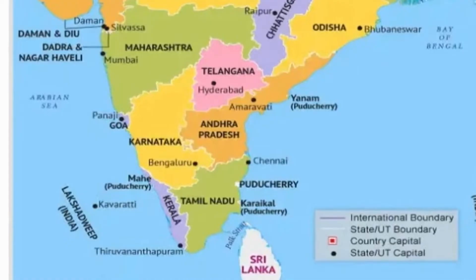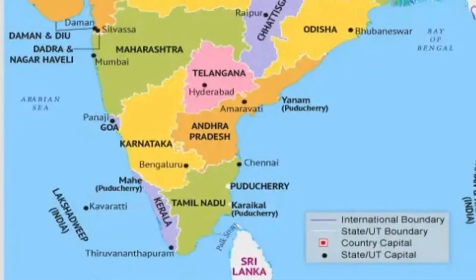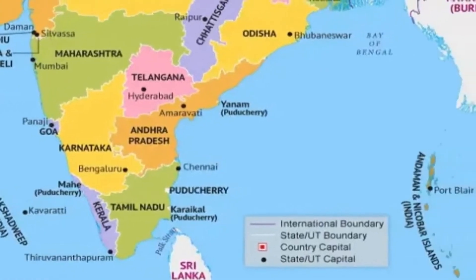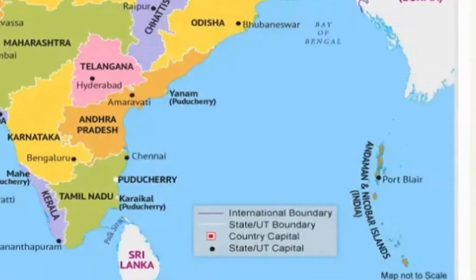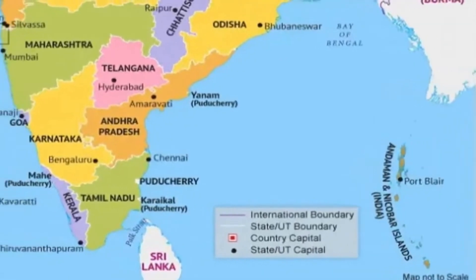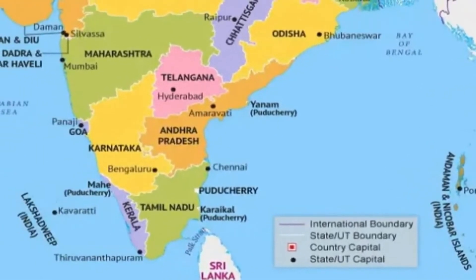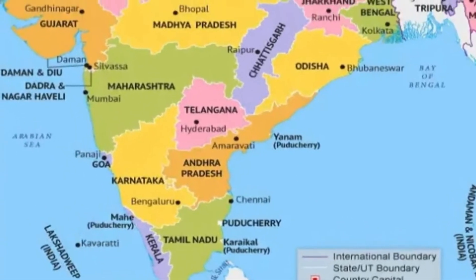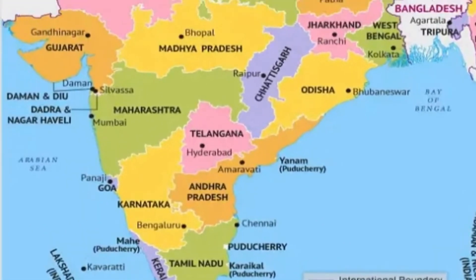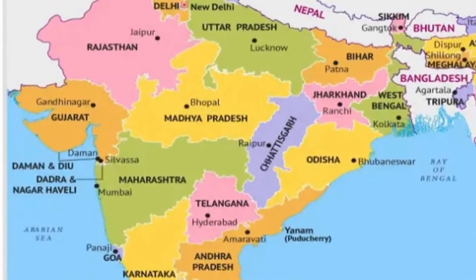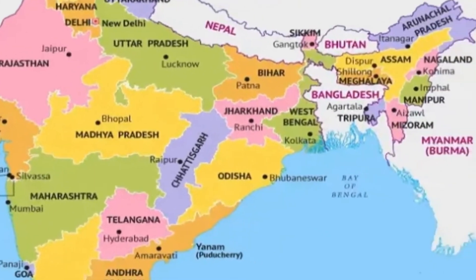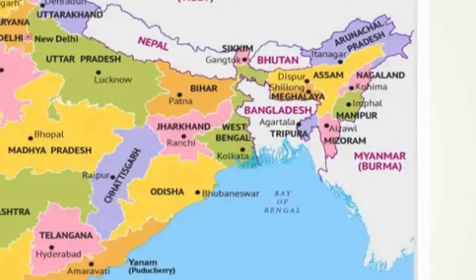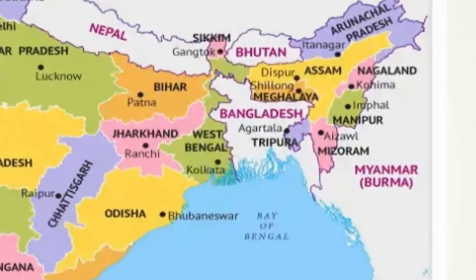There are two island groups: on the right we have Andaman and Nicobar Islands in the Bay of Bengal. Coming further up, we are talking about the Northeast, which is very important in terms of mapwork and boards.